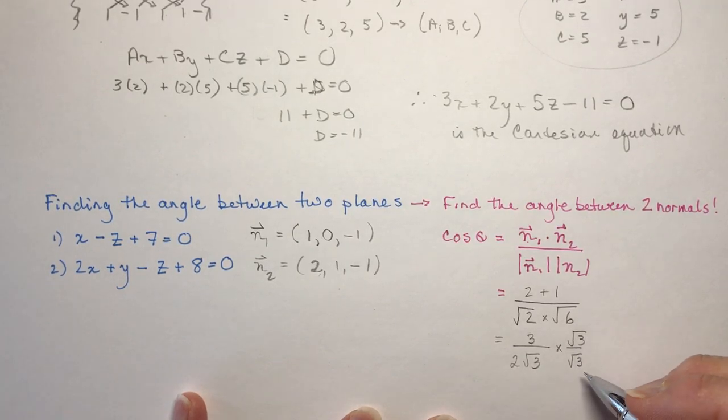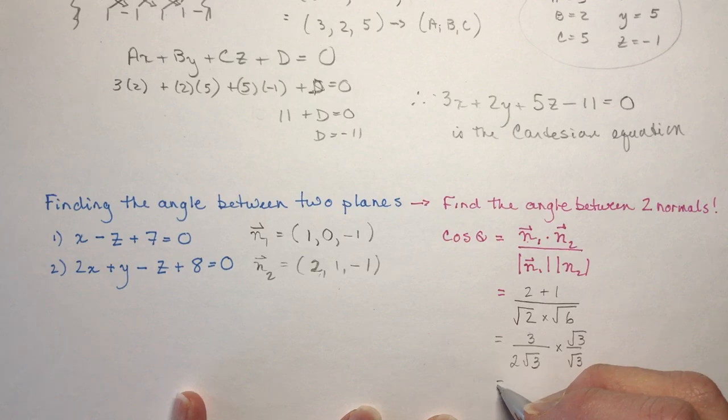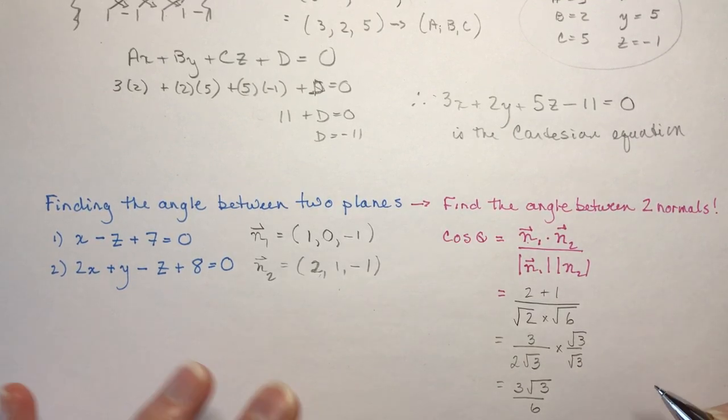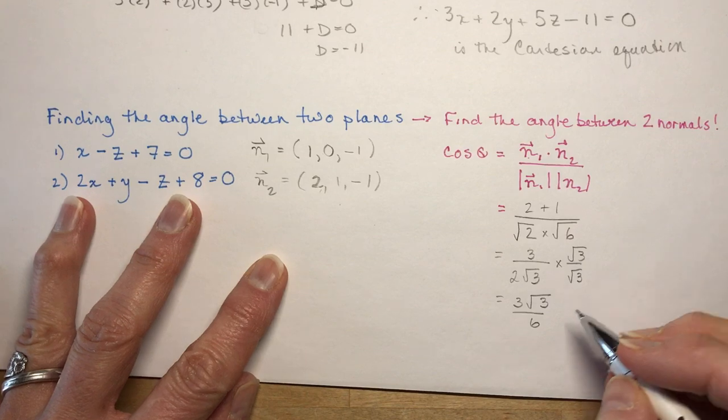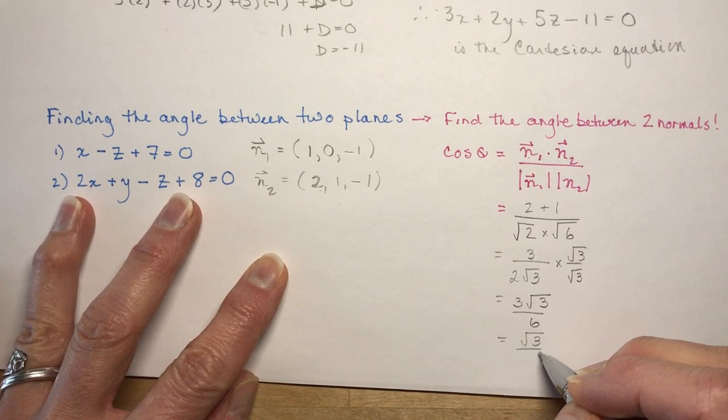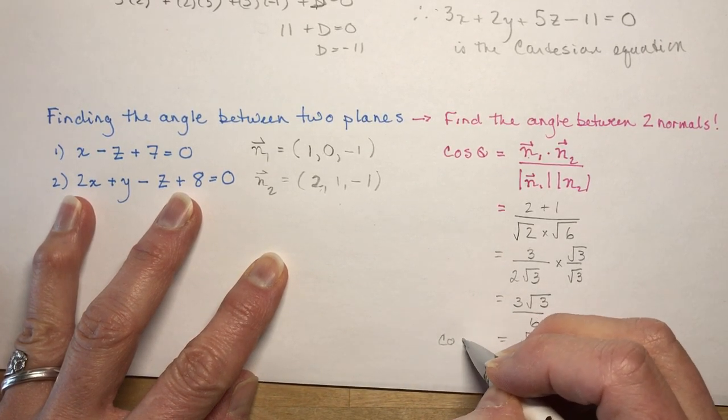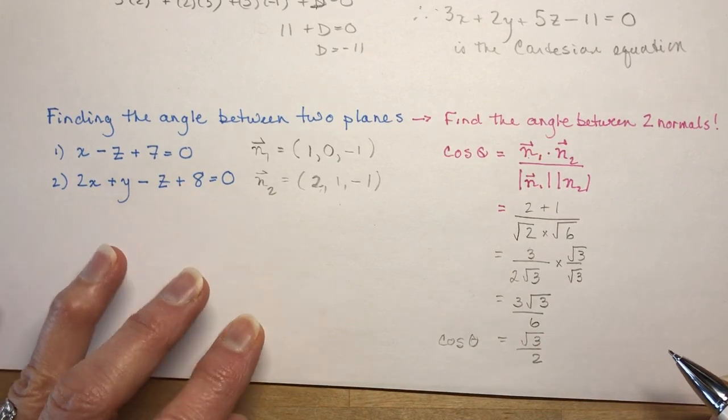Use a little bit of trig. So if I multiply by root three over root three to rationalize the denominator, I'm going to get three root three over six. That's root three over two.